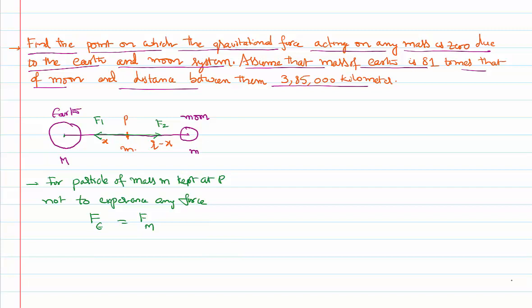How much is the forces we can calculate using the Newton law of gravitation. G mass of the earth and mass of this particle by x square, because we have assumed that separation is x, equals G mass of the moon on this m by r minus x whole square. m's can be cancelled, g's can be cancelled. So simplifying this equation further, mass of the earth by x square equal to mass of the moon by r minus x whole square.